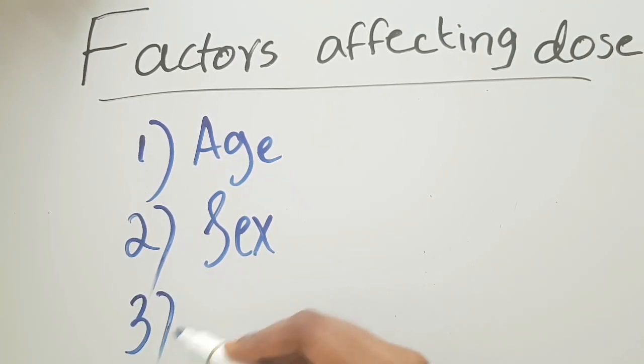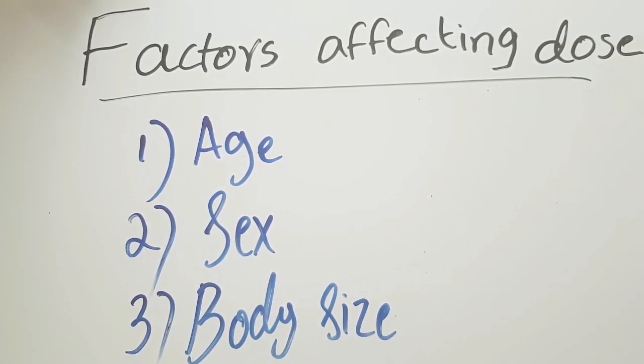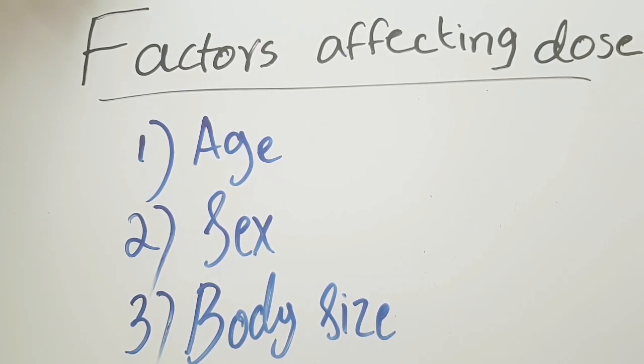The third factor is body size. It mainly influences the concentration of drug in the body. An average adult dose is calculated for a person with 70 kg body weight. That's the standard value, the average body weight. In case of obese patients or extremely lean patients, there will be variation in this weight, and that can affect the drug concentration, mainly the distribution of drug. In that case, we have to calculate the drug based on their body weight.